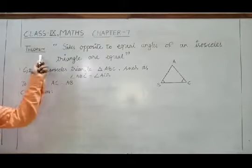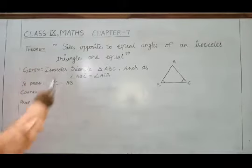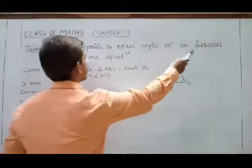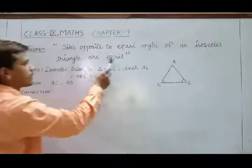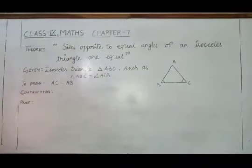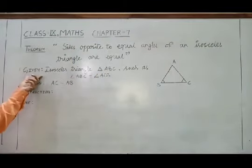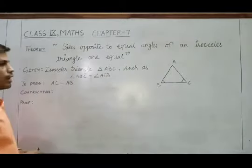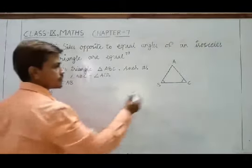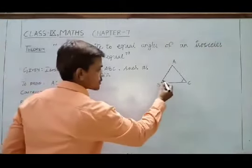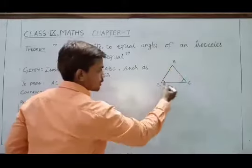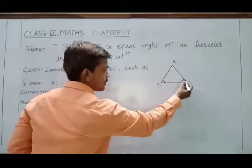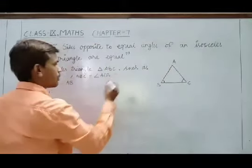Let's discuss the next theorem. It states that sides opposite to equal angles of an isosceles triangle are equal. We are given an isosceles triangle in which two of its three angles, angle ABC and angle ACB, are equal.